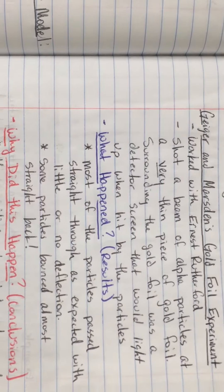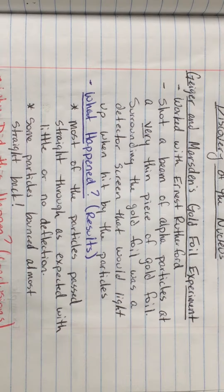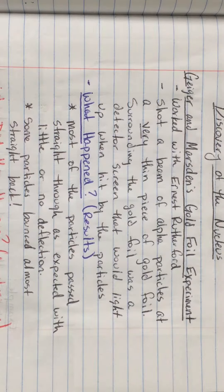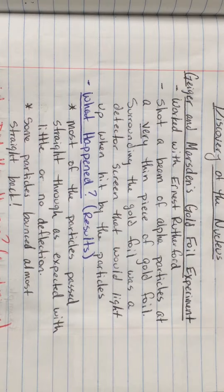What happened as a result of this experiment? First, it's worth talking about what they expected to happen. Geiger and Marsden expected all of the particles to pass through the gold foil, because the positive charge in Thomson's model of the atom was very diffuse — there wouldn't have been anything to deflect those particles. And indeed most particles did pass straight through with little or no deflection. However, the surprising part was that some particles bounced off at different angles, and some bounced almost straight back.